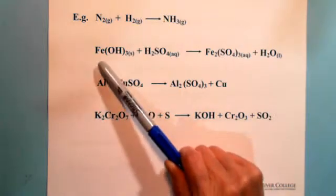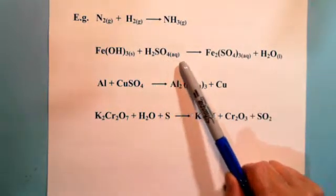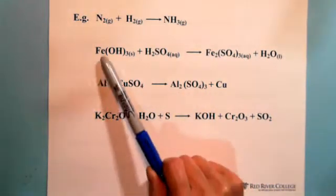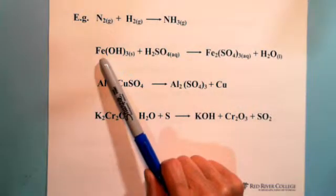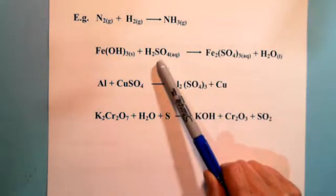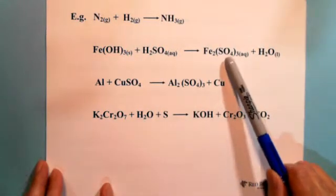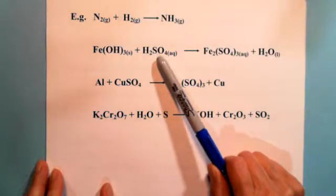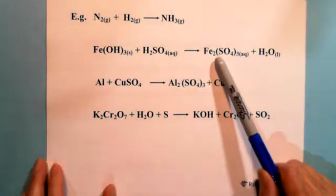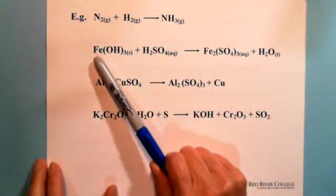The second one is iron-3 hydroxide plus sulfuric acid producing iron-3 sulfate plus water. Before reaction, iron is 3-positive; after reaction it is still 3-positive. Sulfate is 2-negative before and still 2-negative after. SO₄ doesn't change, iron doesn't change, oxygen and hydrogen don't change — so there is no charge transfer. This is not a redox reaction.